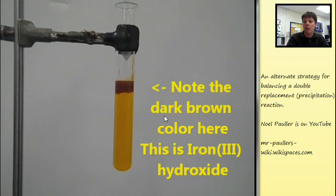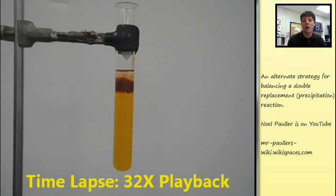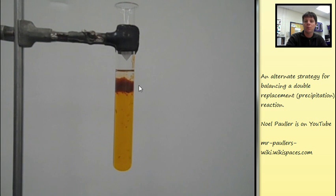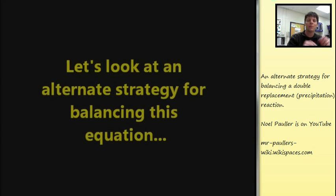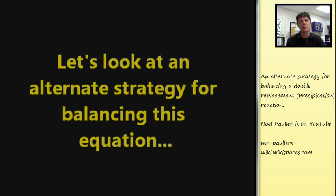Note that there's a dark brown color that's forming right here. This is the formation of a new compound. This is iron 3 hydroxide, FeOH3. Please note that there's a clearing taking place up here. We can see that the iron hydroxide is actually falling or precipitating.